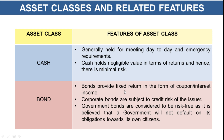Bonds provide fixed return in the form of coupon or interest income. There are corporate bonds which are subject to credit risk of the issuer, and government bonds that are believed to be risk-free as the government will not default on obligations towards its own citizens. If you want regular income out of your investment, you must invest in bonds. Government bonds are considered much safer — if you are risk-conservative, go for government bonds. If you can take higher risk, go for corporate bonds, which are a little riskier but provide better returns.